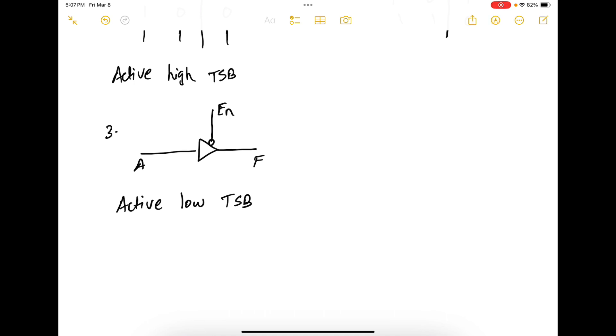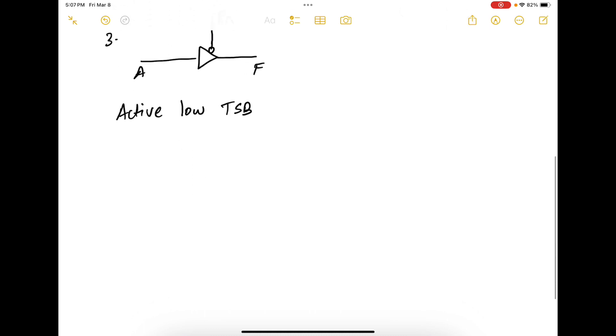So when I say active low, it means that a 0 will make it act as a buffer and a 1 will make it act as an open circuit. So the truth table is enable A, F.